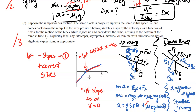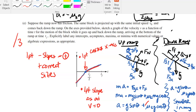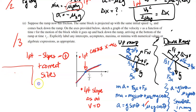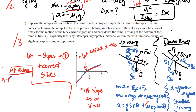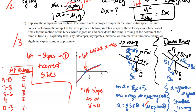Thanks so much for solving this with me. For a general AP score guide: 9–15 points is about a 5, 7–8 points is a 4, 5–6 points is a 3, around 4 points is a 2, and 0–3 is a 1. If you're not doing as well as you want, keep practicing these AP free response problems — you'll get better and better, I promise. Let me know if you have questions on this video. Thanks for watching.